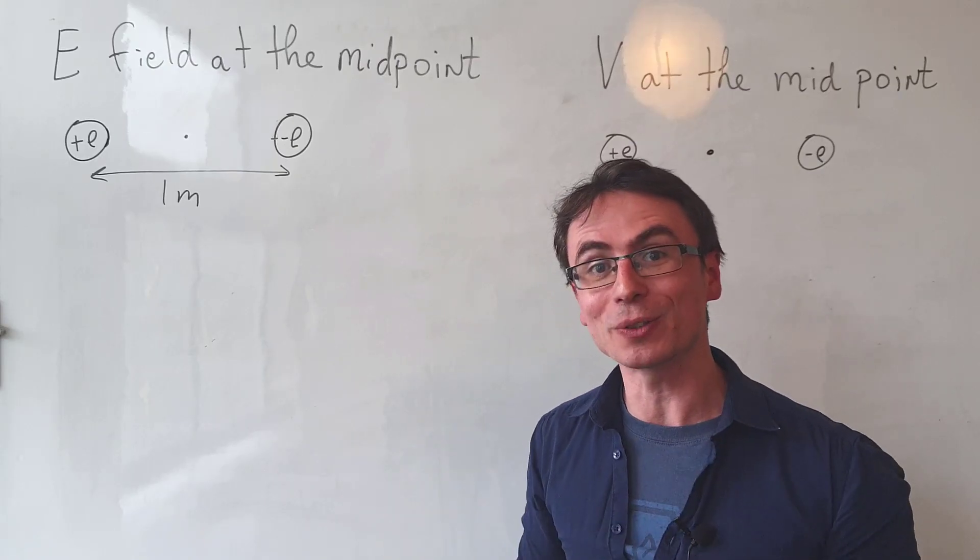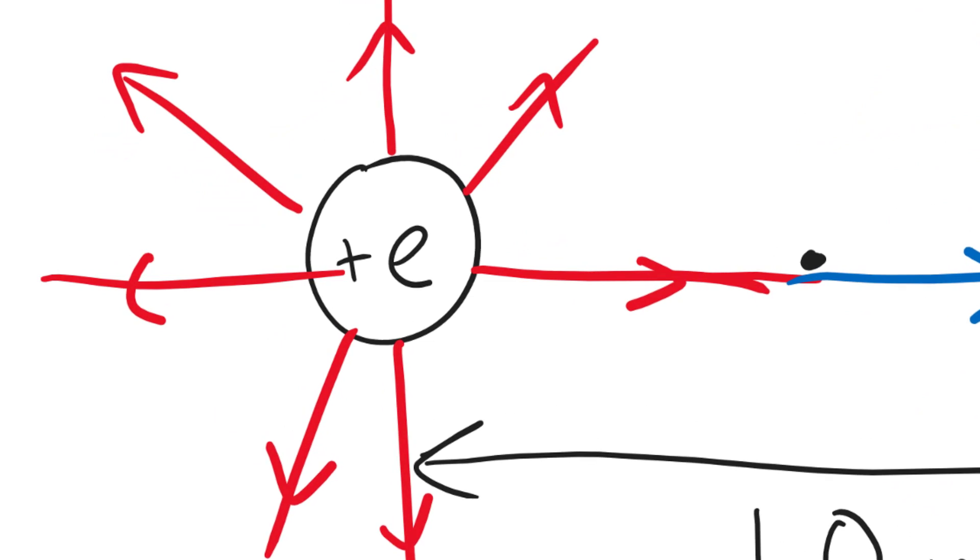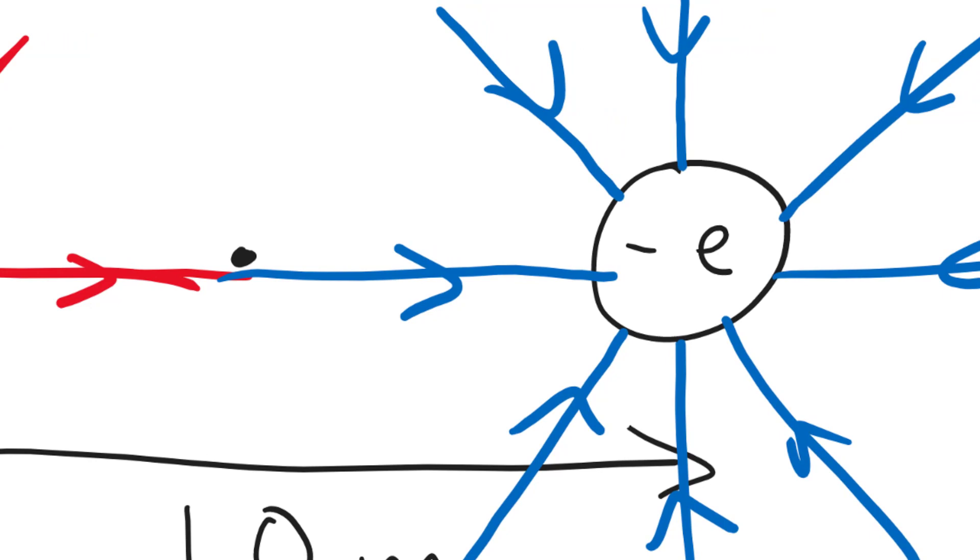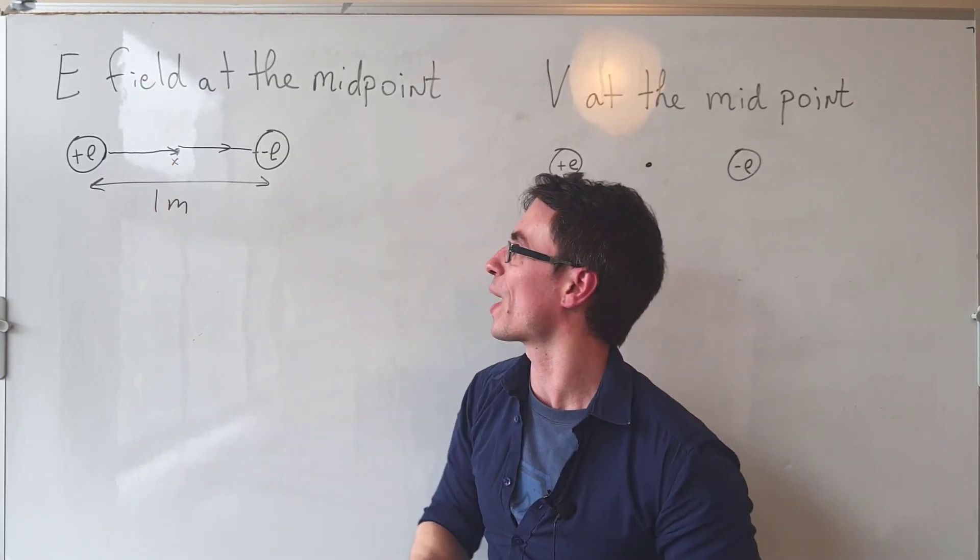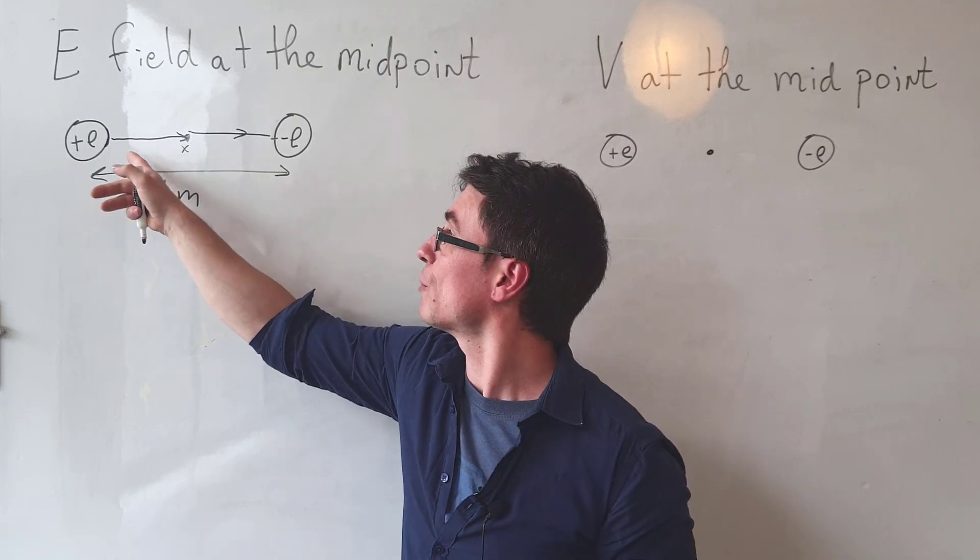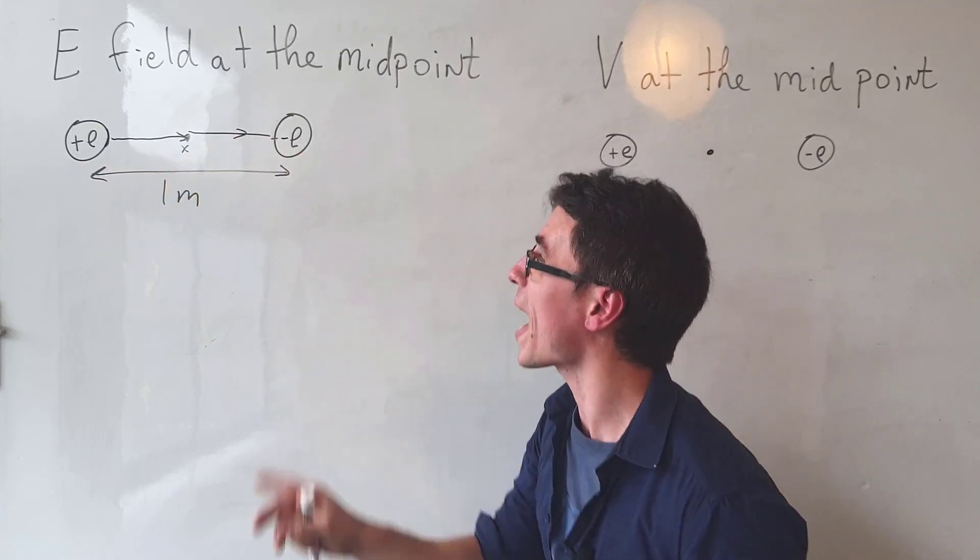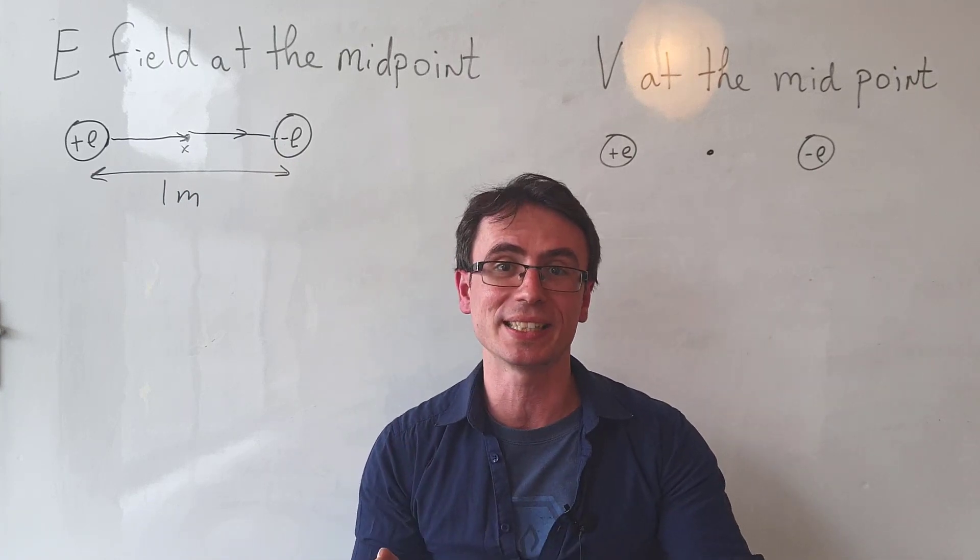Remember, the electric fields come out of a positive charge, but also they go into a negative charge like this. So let's put a small positive test charge right over here. This little charge would be repelled by the positive E, but it will also be attracted towards the negative E.